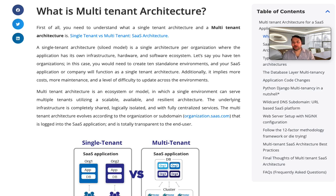In this video, we will talk about what is multi-tenant architecture. First, you need to understand what is single-tenant architecture versus multi-tenant architecture. A single-tenant architecture is a single architecture per organization where the application has its own infrastructure, hardware, and software ecosystem. If you have 10 organizations, you would need to create 10 standalone environments, and your SaaS application or company will function as a single-tenant architecture.